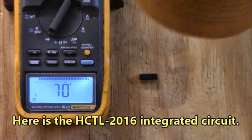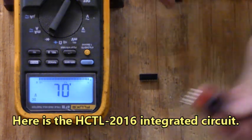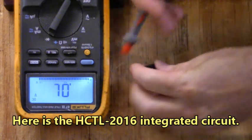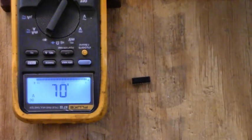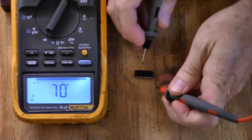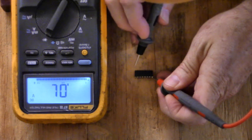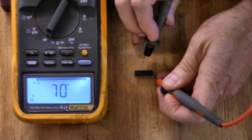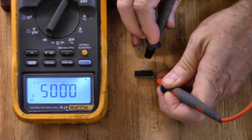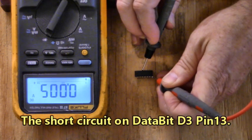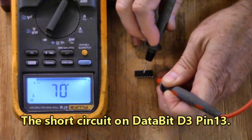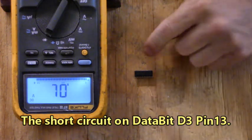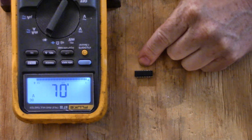Let's put the red lead on ground. There's data bit zero, data bit one, data bit two, data bit three. Look at that, there's the short circuit, 0.005 on the HCTL-2016. We'll order a new one of these and that'll fix that digital readout.